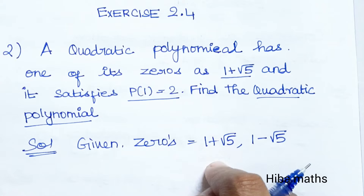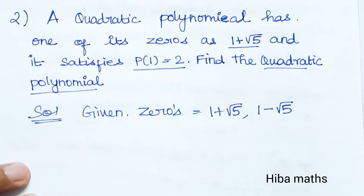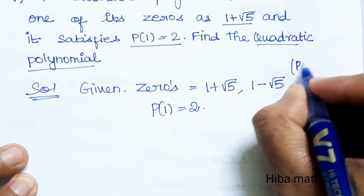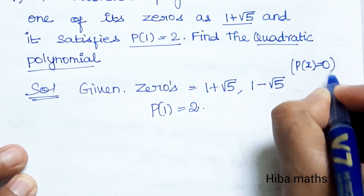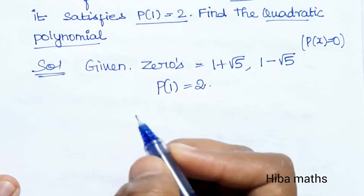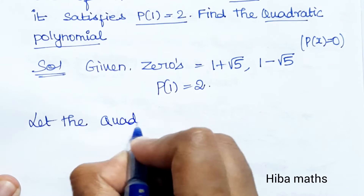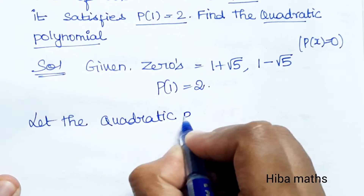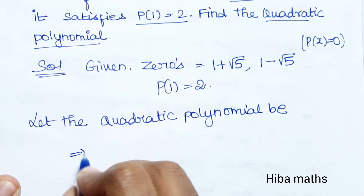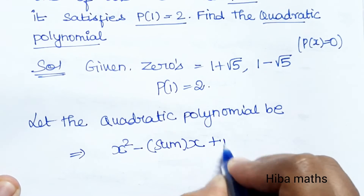It satisfies p(1) = 2. Let the quadratic polynomial be k times x squared minus sum of the roots times x plus product of the roots, where 1 minus root 5 and 1 plus root 5 are the two roots.